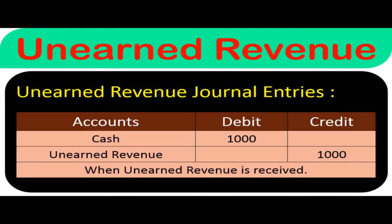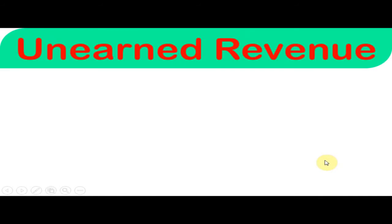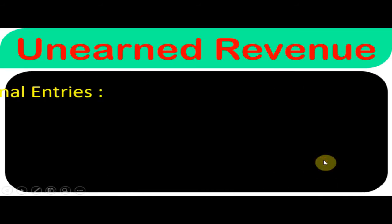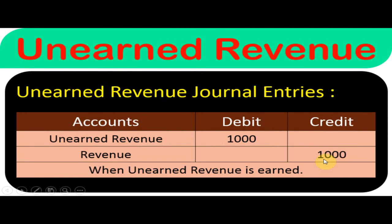When unearned revenue is received, cash will be debited and unearned revenue will be credited. When unearned revenue is earned, unearned revenue will be debited and the revenue account will be credited.